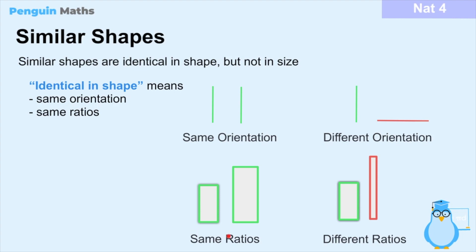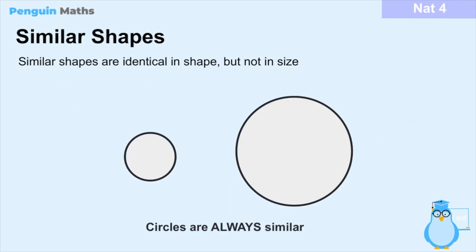When we talk about having the same ratios, this refers to being a miniature or bigger version of the original shape. We have an original rectangle, and a bigger version of it — they have the same ratios. But if we look at two shapes with different ratios, the second one is thinner and longer, so it's not a bigger version of the original and therefore they don't have the same ratio.